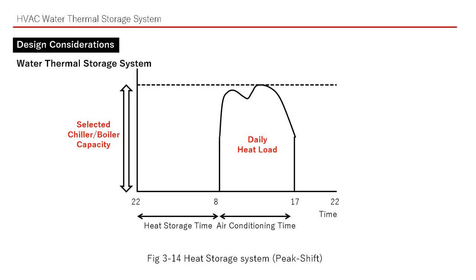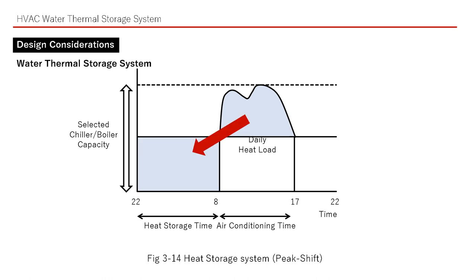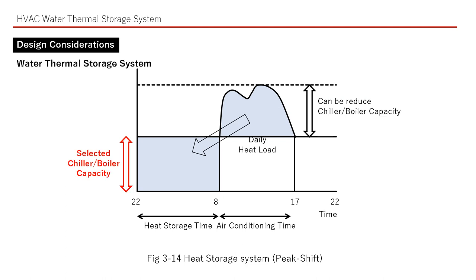Let's reconfirm the concept of the thermal storage tank using the graph. Air conditioning time is 8 to 17 o'clock, and there is a curve for daily heat load. Chiller or boiler capacity is selected based on the peak load, making it a large capacity equipment. By dividing the daily heat load and shifting it to night time, we can reduce the peak load and select smaller capacity equipment.